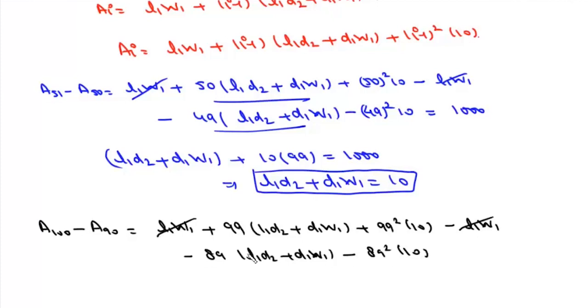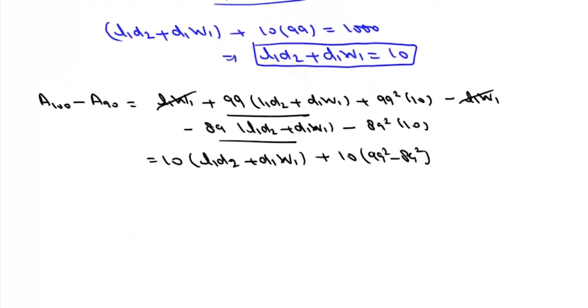Now this L1W1 will cancel and here this is 10 times L1D2 plus D1W1 and here we will take this 10 common and this is 99 square minus 89 square. Now L1D2 plus D1W1 is 10 so it will be simply 100 plus 10.